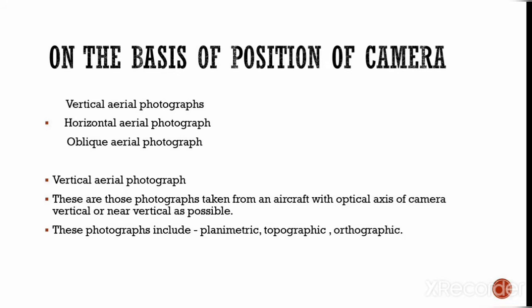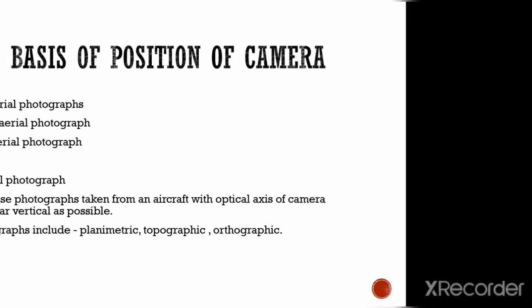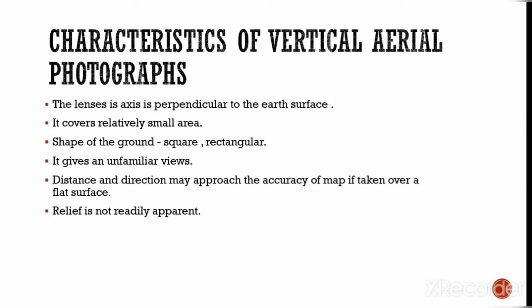Vertical aerial photographs include planimetric, topographic, and orthographic types. The characteristics of vertical aerial photographs are: the lens axis is perpendicular to the Earth's surface; it covers a relatively small area; the shape of the ground is square and rectangular; it gives an unfamiliar view; and it approaches the accuracy of a map if taken over a flat surface, where distance and direction can be measured.